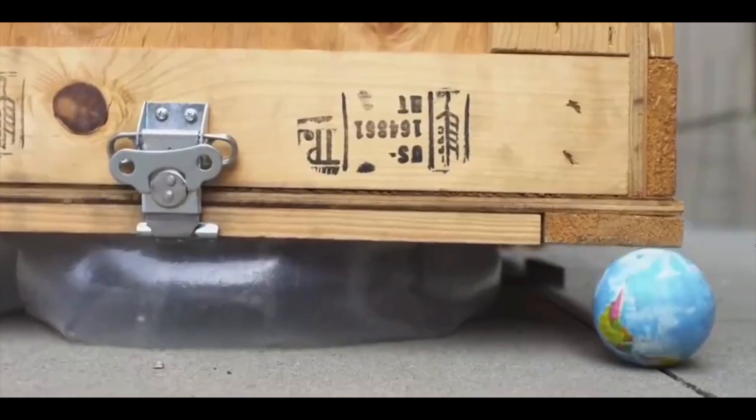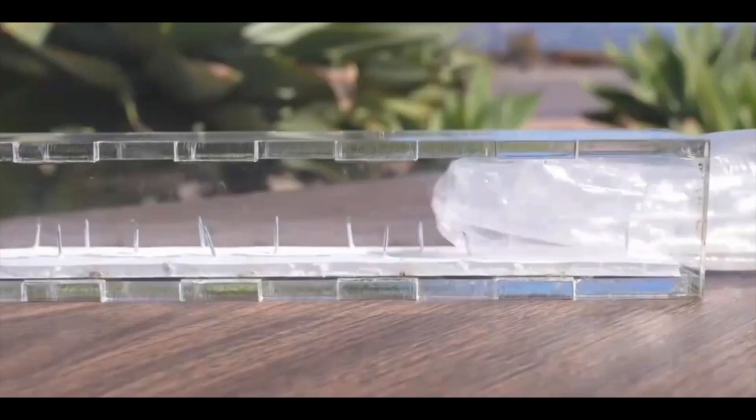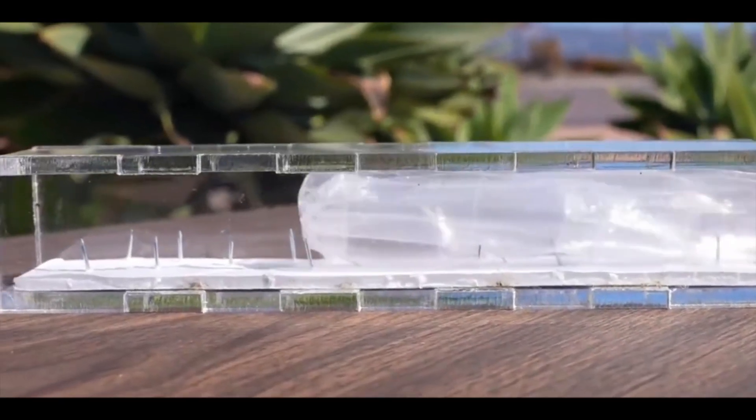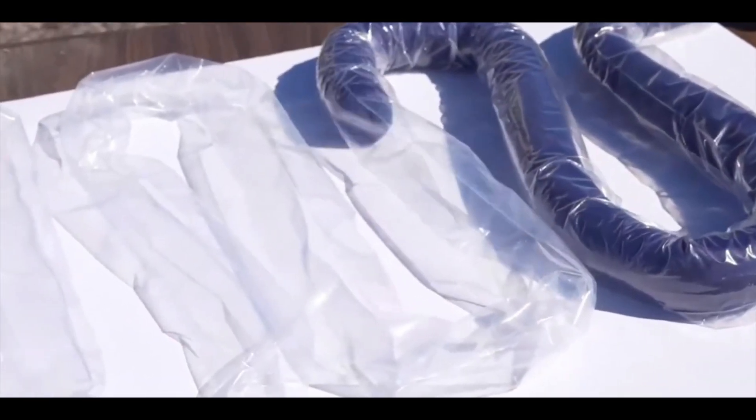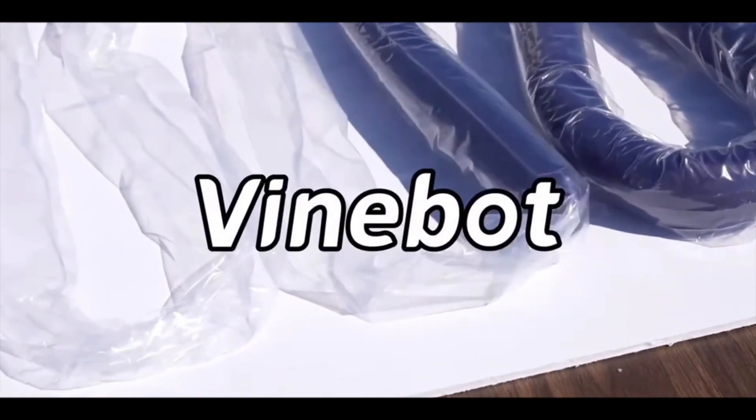In summary, the honeycomb structure has good bending and elongation ability, which gives the soft arm good flexibility. In addition, the honeycomb structure also has good anti-torsion ability, which is the foundation of the arm's load-bearing capacity.